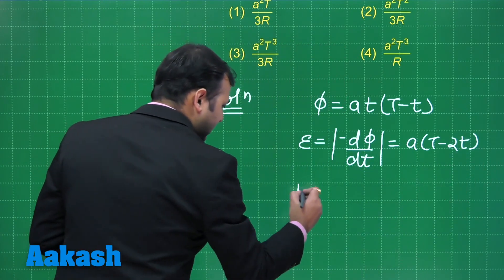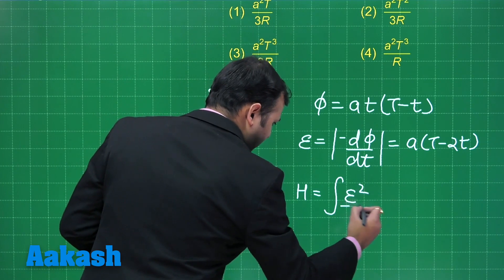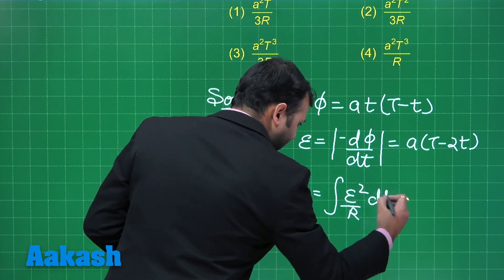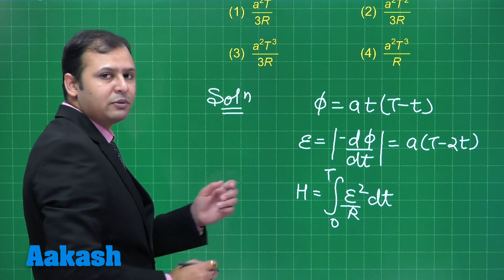Now, we are very well aware that heat can be written as integral of E square by R into dt and the limit should be from 0 to capital T as per the question.